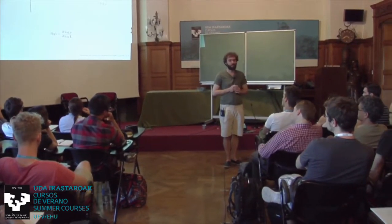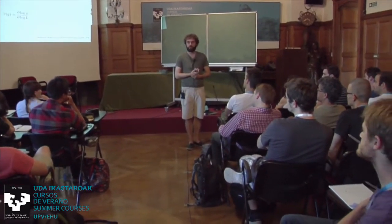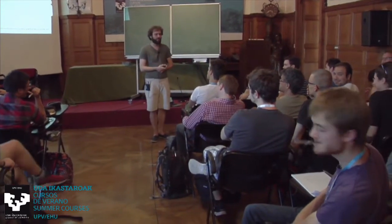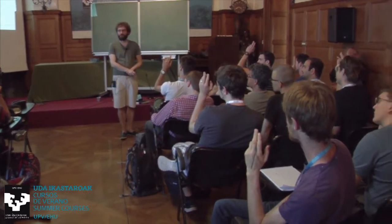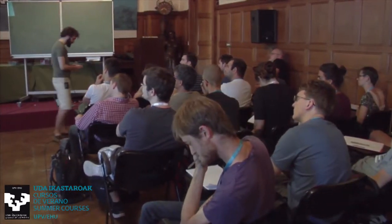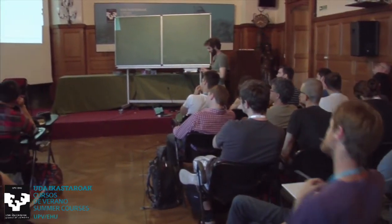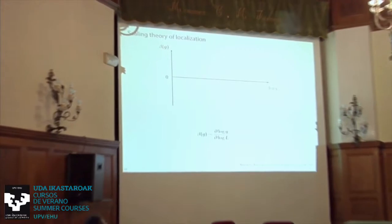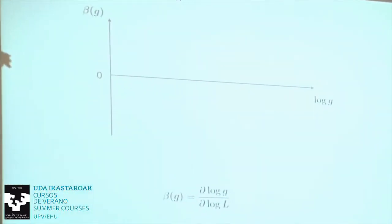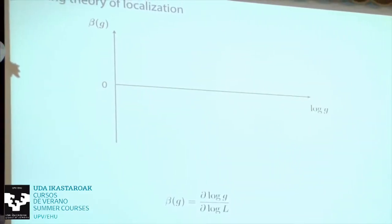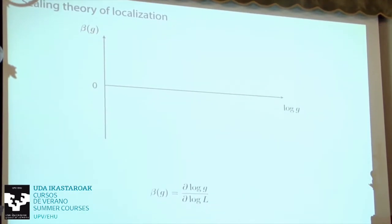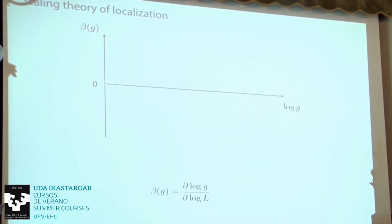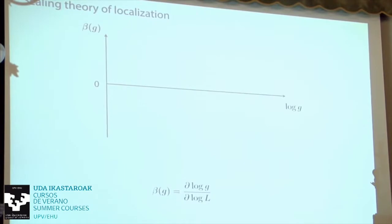To know what to expect and understand the surprise, I need to discuss the scaling theory of localization. There's a plot I'll build up slowly. On the y-axis is β(g) = d(log g)/d(log L), and on the x-axis is log L, where g is the conductance and L is the system size. This beta function tells me how the conductance changes as I change the system size.